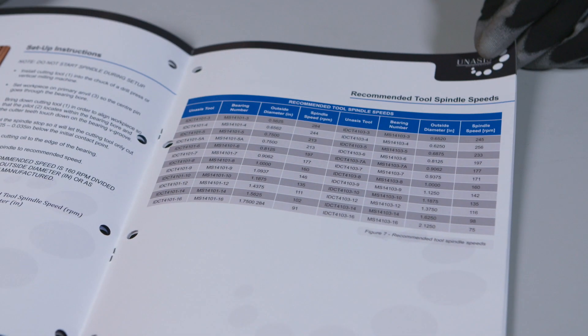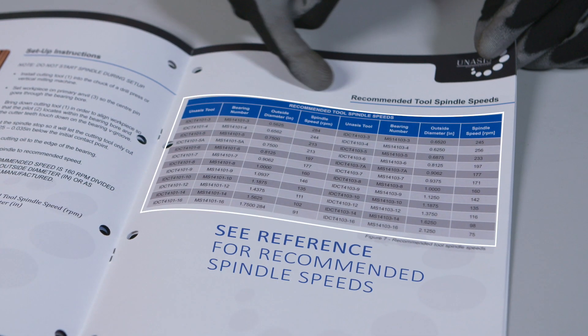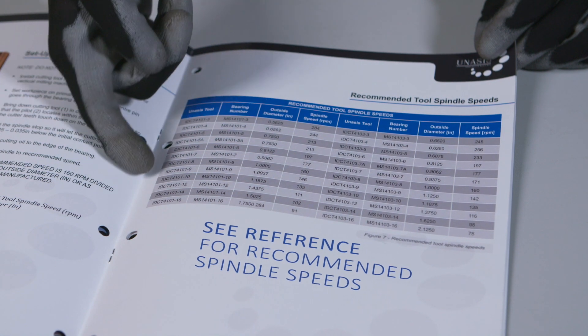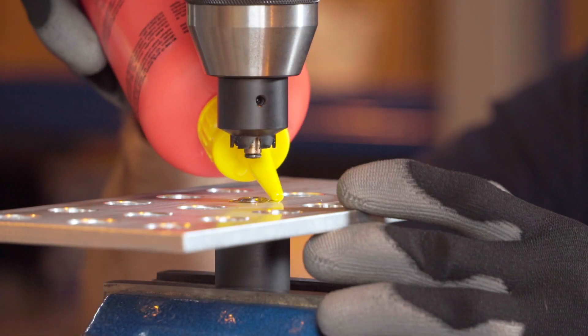The spindle speed will need to be adjusted according to the type of bearing. Check the documentation for a table of recommended values. Apply cutting oil to the edge of the bearing.